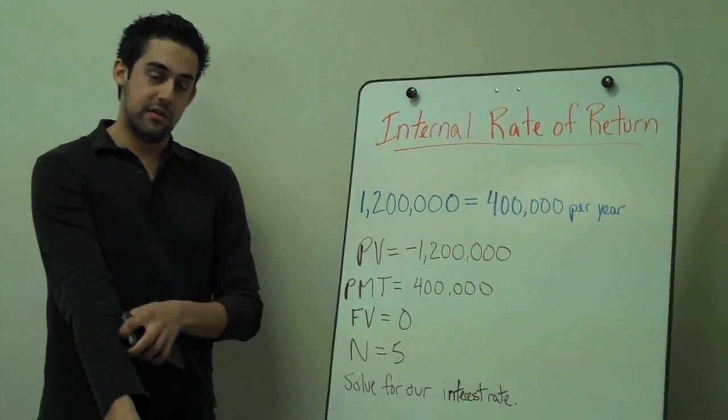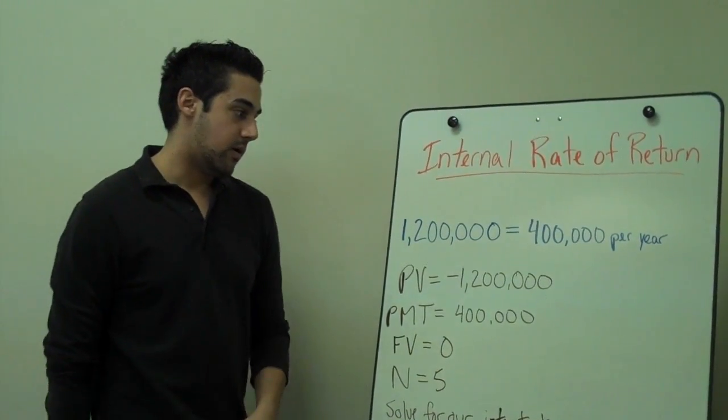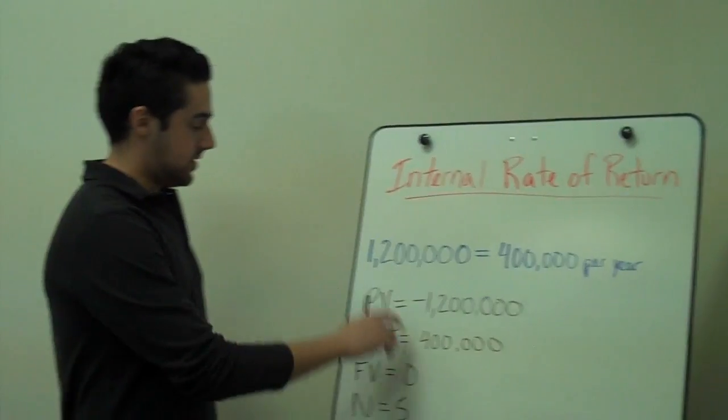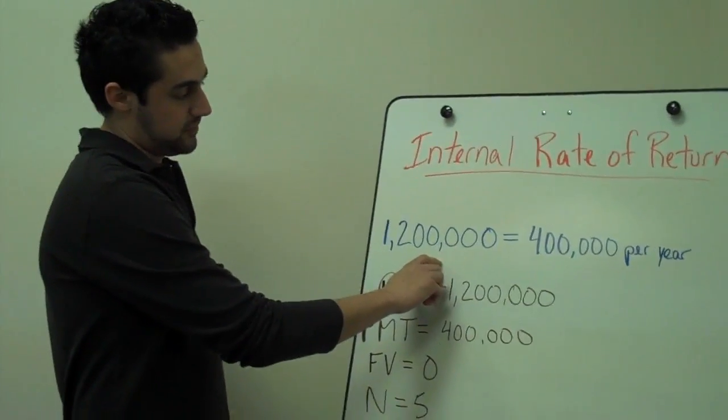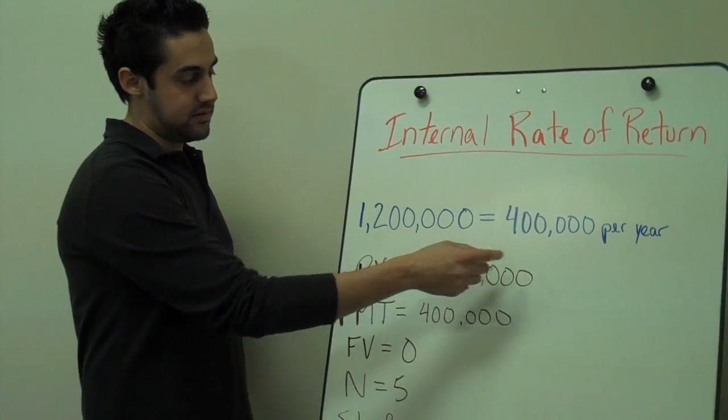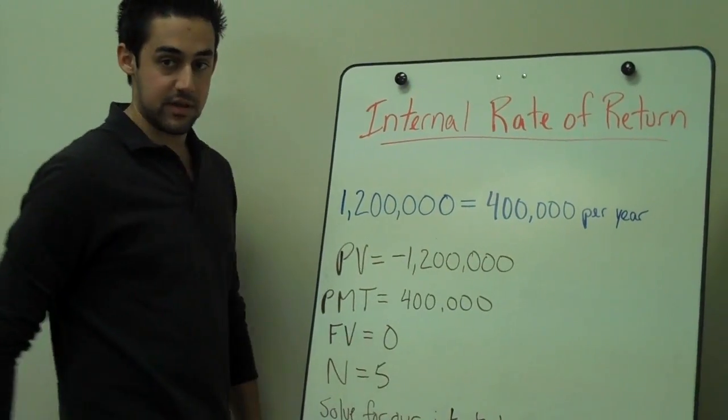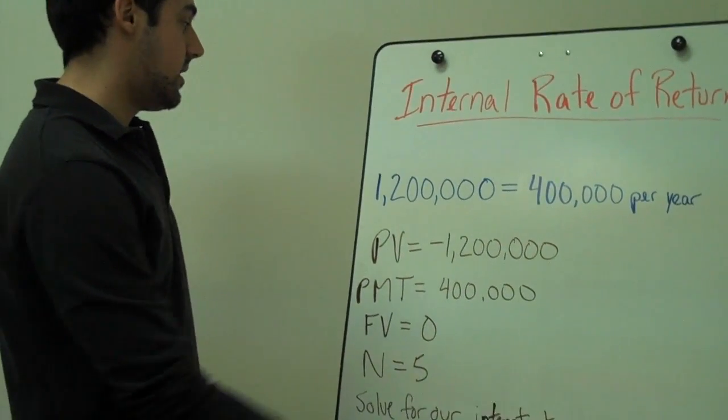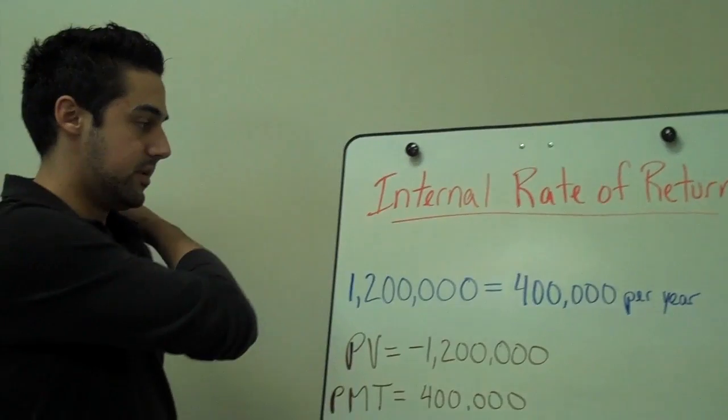So now looking at the internal rate of return, what that is, is our initial outlay right here of $1.2 million. What is the discount rate that will bring this $400,000 a year equal to $1.2 million?